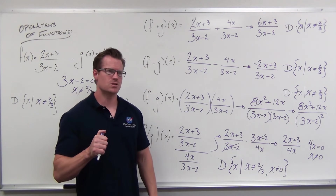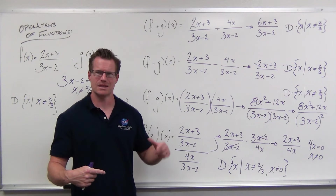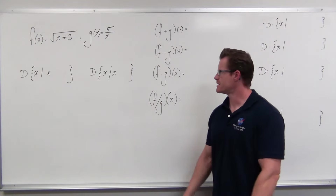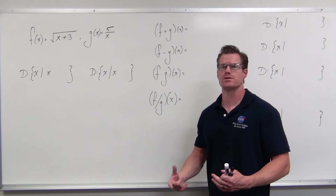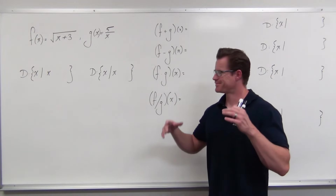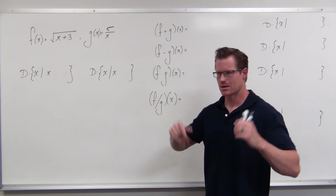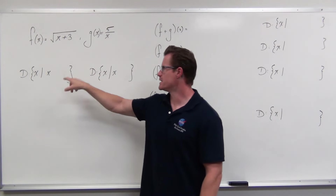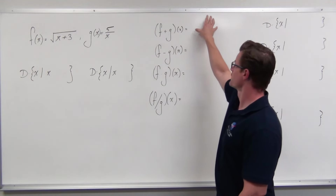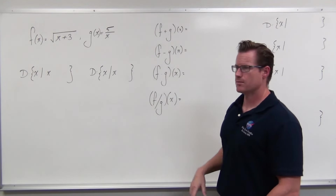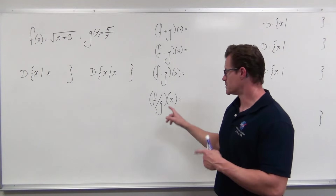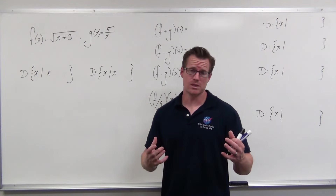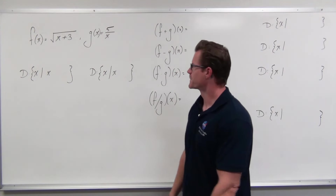So I hope that makes sense. We're going to do one more example to talk about square roots and then we'll be done. For this last one, we're going to add, subtract, multiply, and divide these functions, and we're focused on the domain. Your first step should be: find your domain first, and then recognize that no matter what you do, you're going to have both of those domains in every single one of these function operations — and you might even add some more to it.